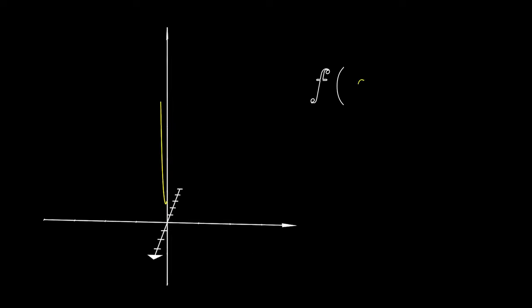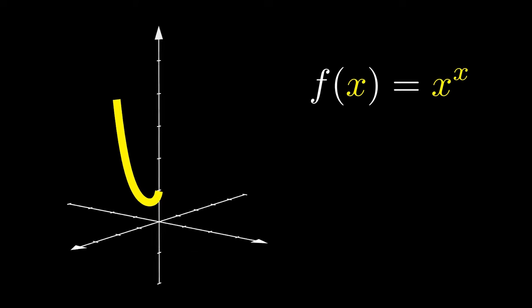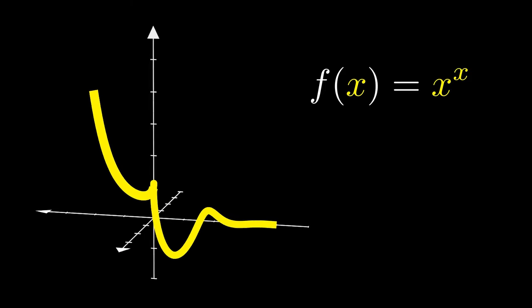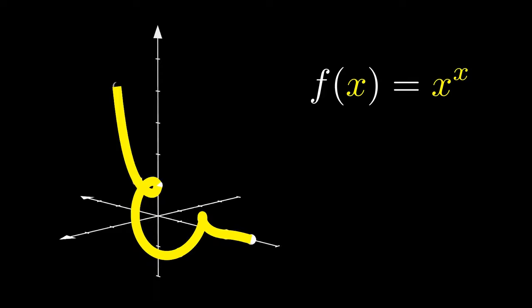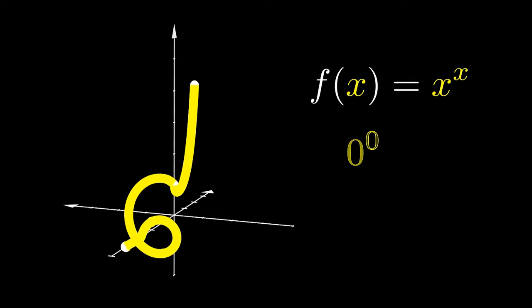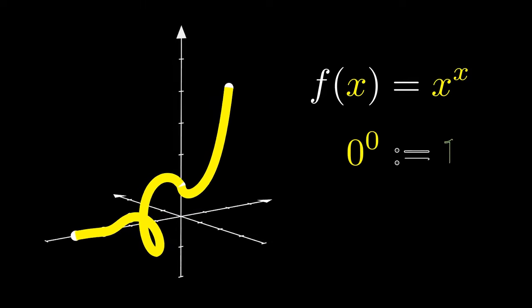Before you is the graph of the function x to the power of x. We're going to explain how we obtain this graph for negative values of x, and make sense of the claim that 0 to the 0 should be defined as 1.